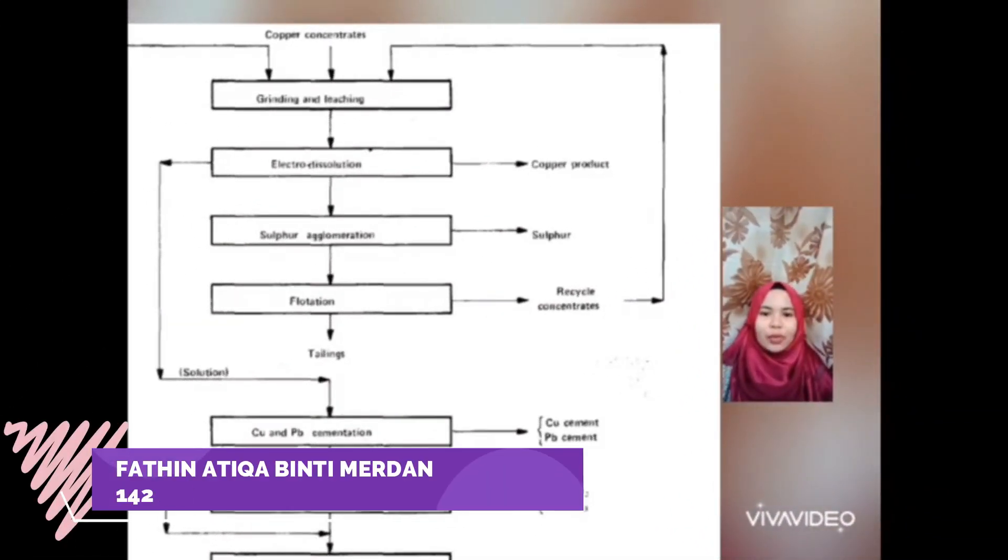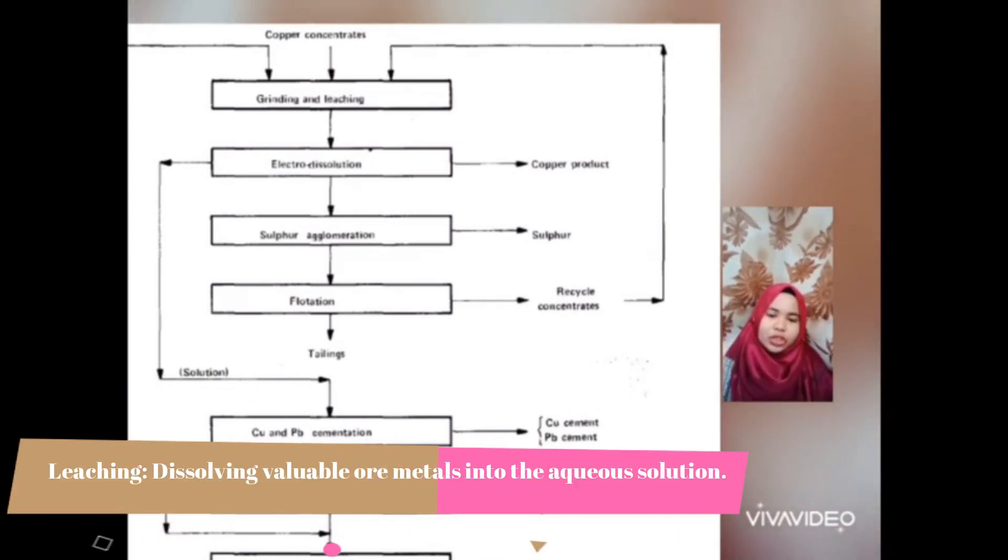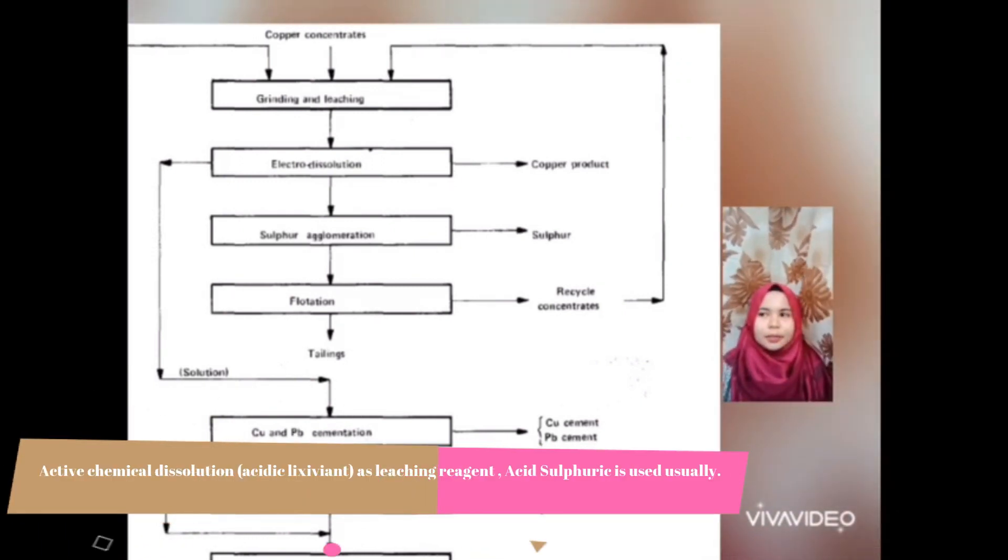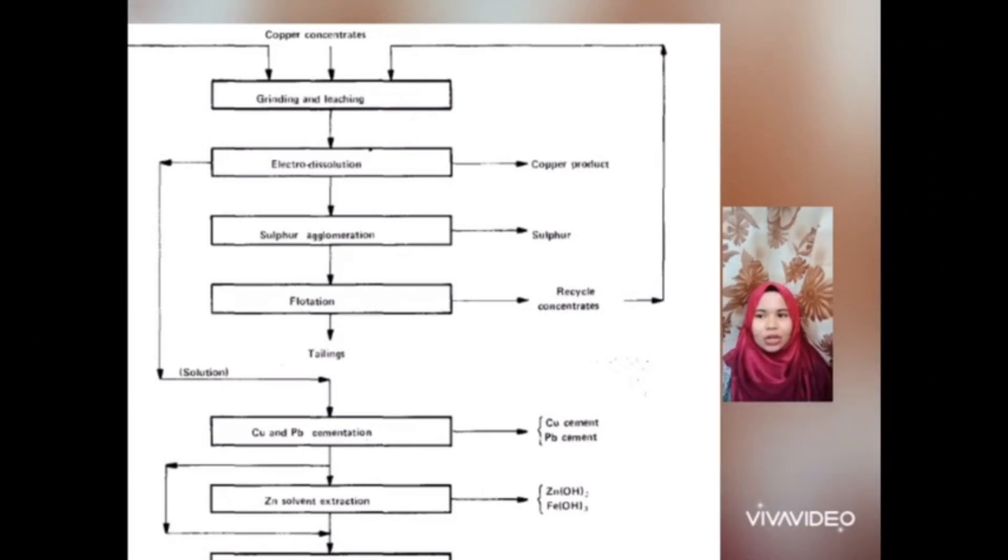Hi, in this video I will explain about the flow sheet in Cymbal process. The first stage for flow sheet in Cymbal process will involve the grinding and leaching. Leaching is a process where we will resolve the valuable metal in the ore by using aqua solution. In leaching, we will use the active chemicals for the dissolution known as the leaching agent. Since in this process we will process copper, we will use sulfuric acid as our leaching agent.